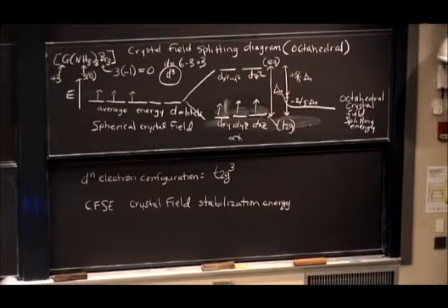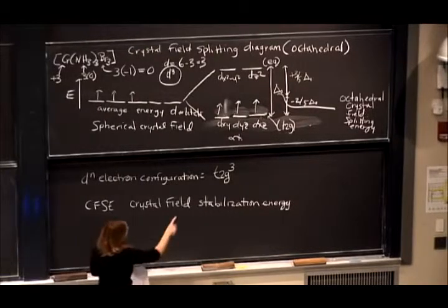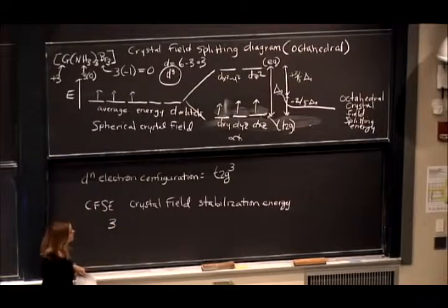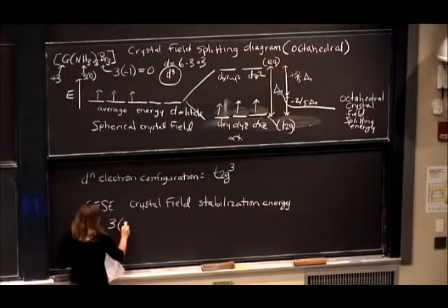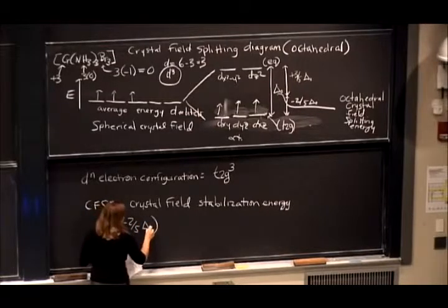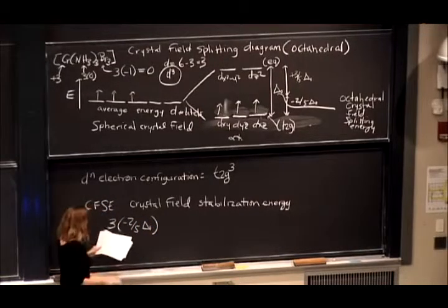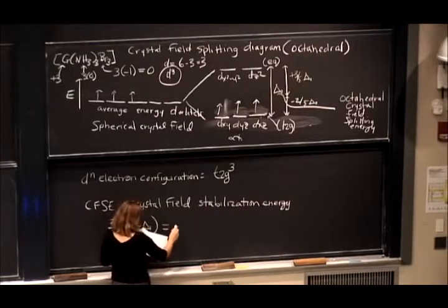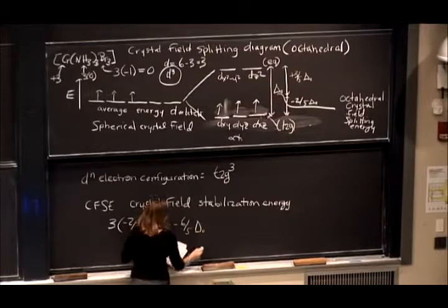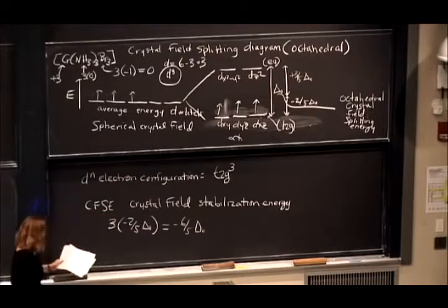And so what we can do there is see that you have three electrons in those lower sets of orbitals. And those orbitals are stabilized by 2/5 times the octahedral crystal field splitting energy. And so that gives an answer of -6/5 times the octahedral crystal field splitting energy.